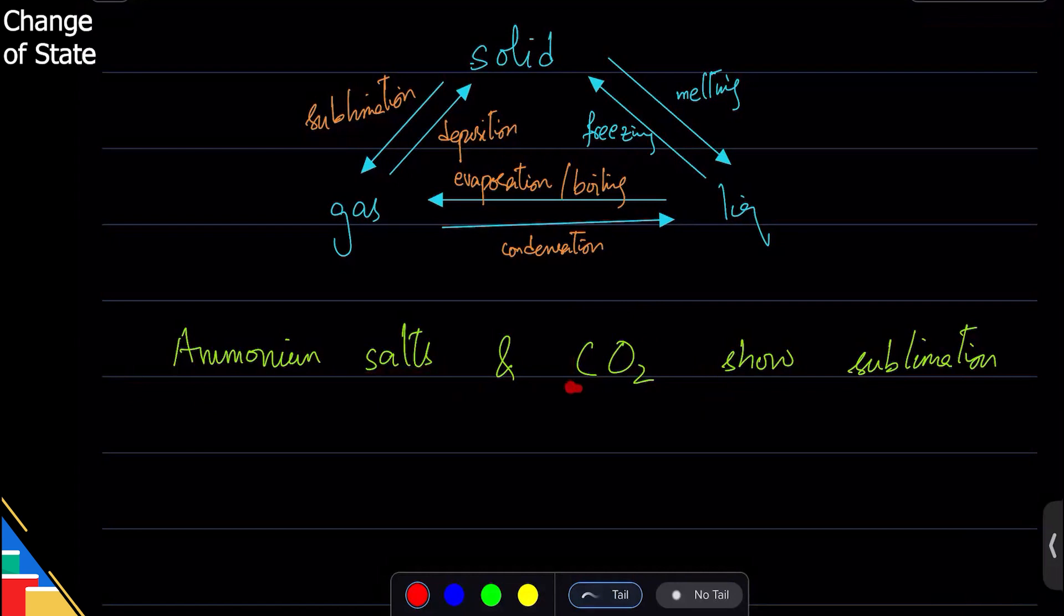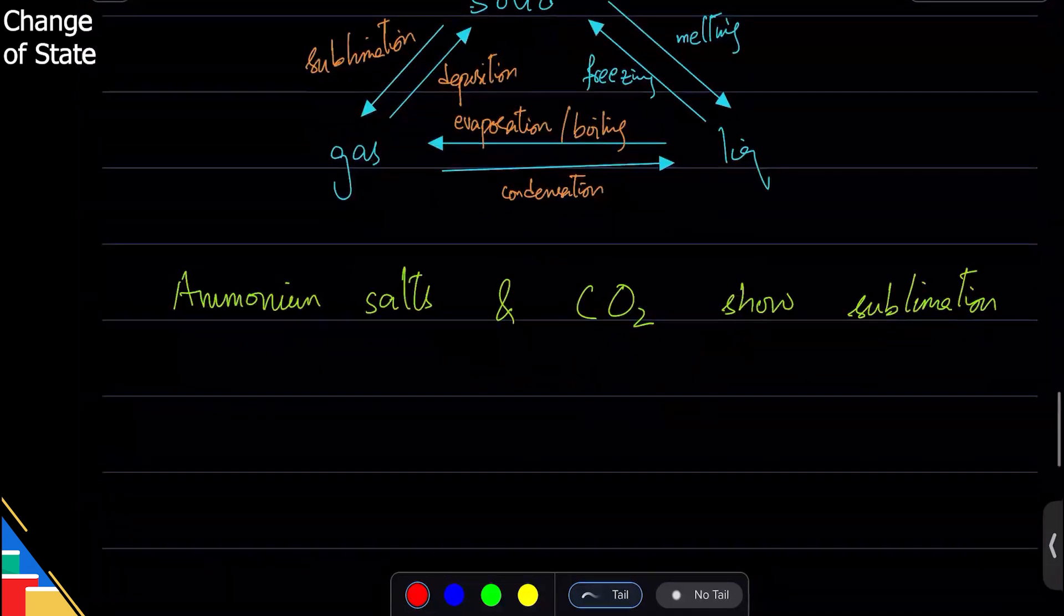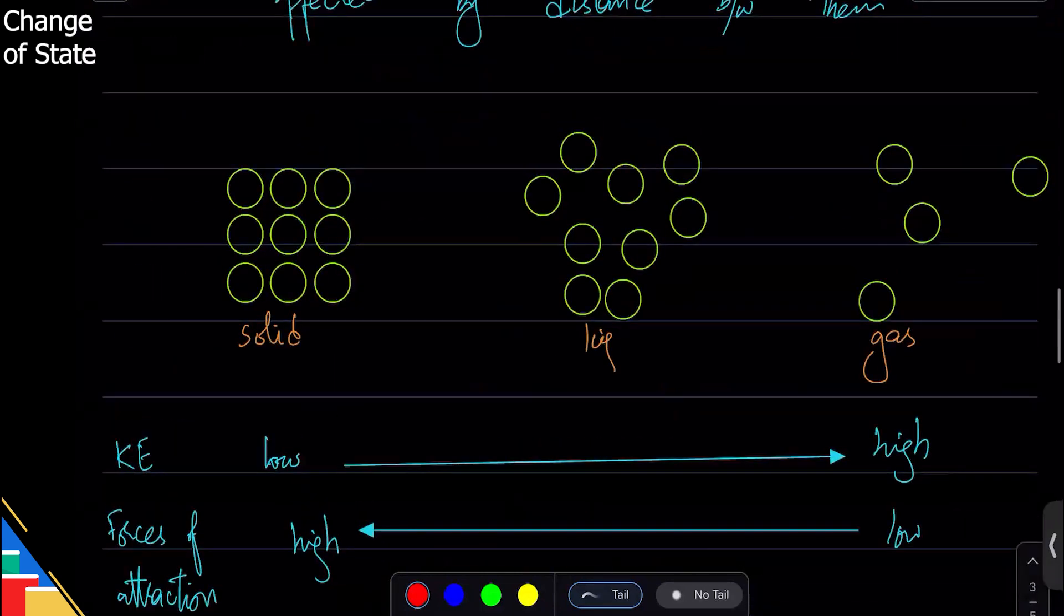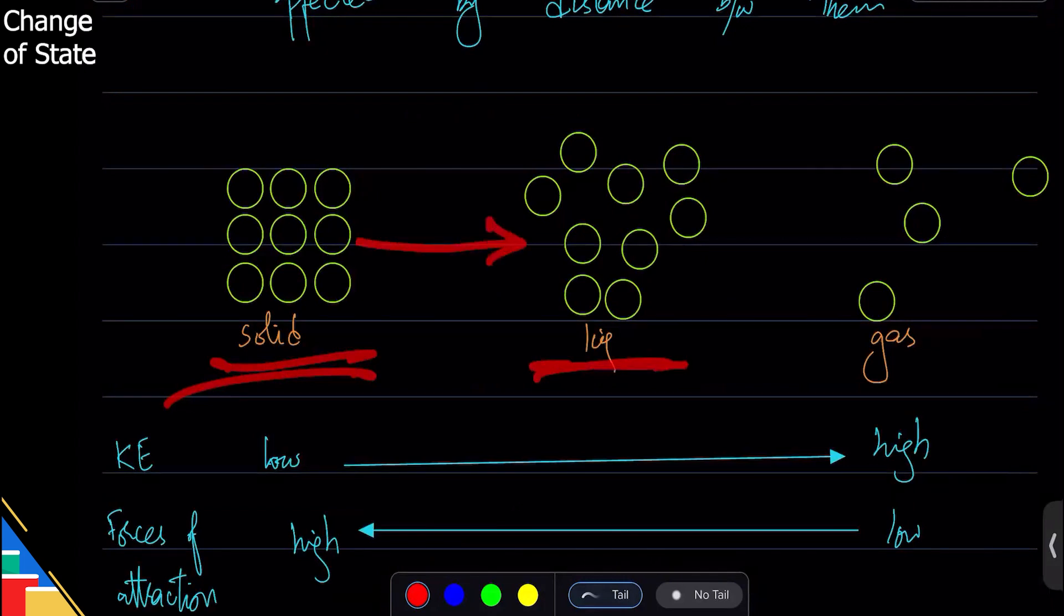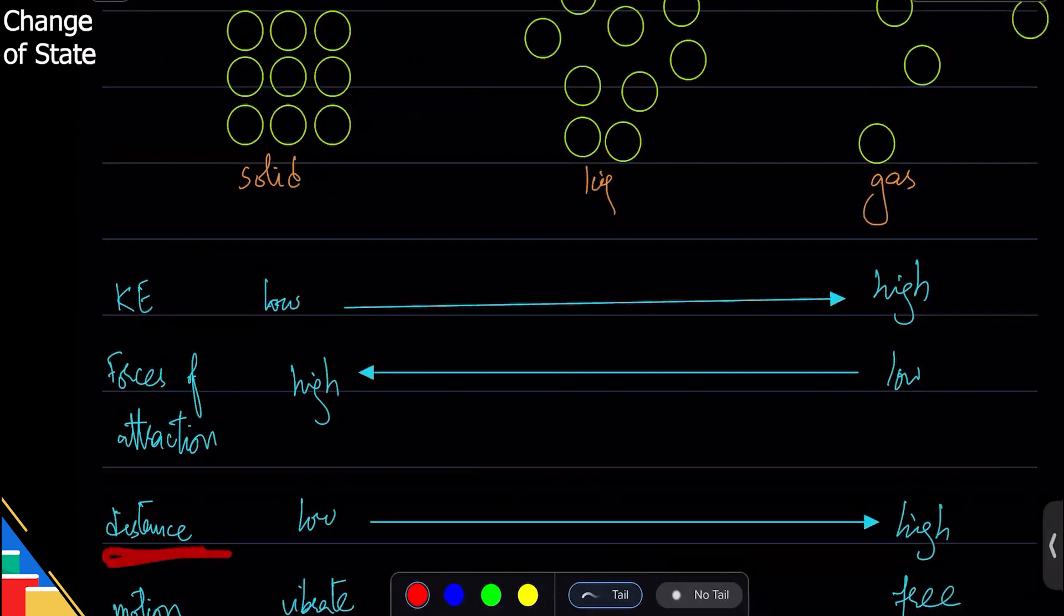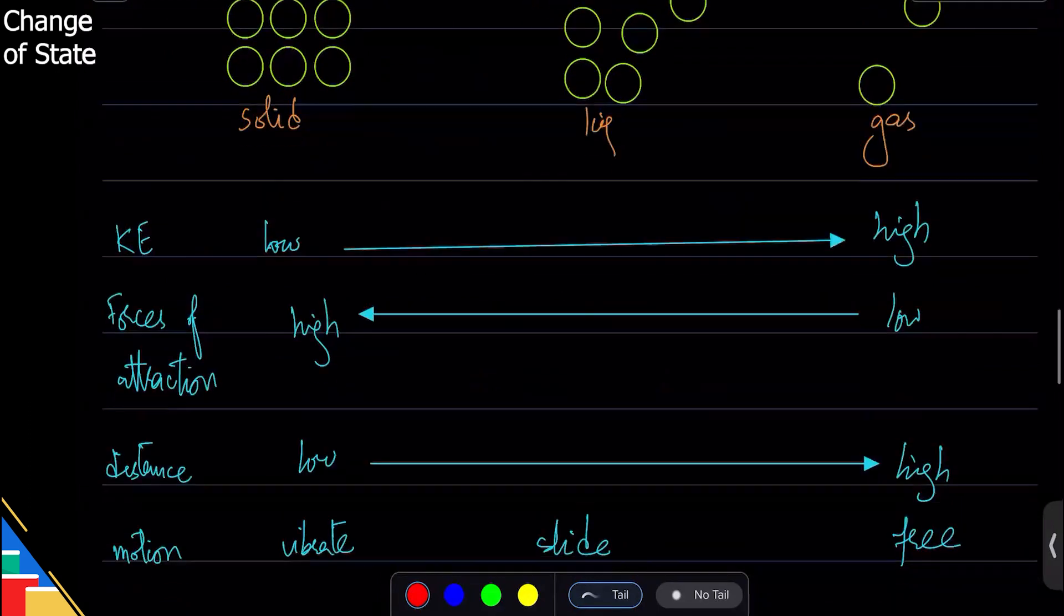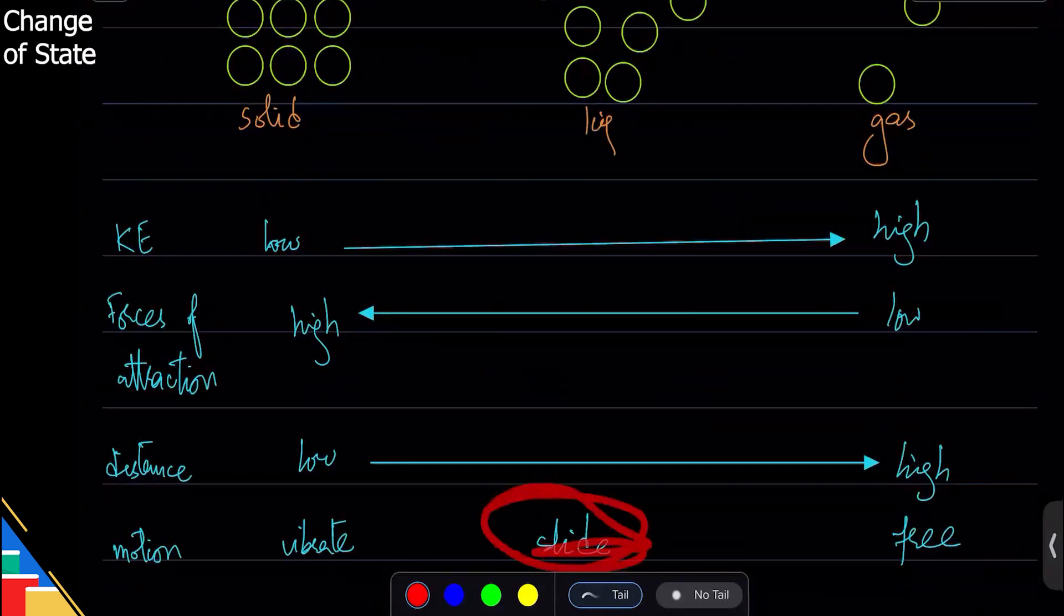Now how exactly does this happen? What are the underlying reasons? Let's go back to this diagram. Solid is changing to a liquid and that process is melting. What's happening? The distances are increasing, the motion is more free—it goes sliding instead of vibration—and the forces are weaker.